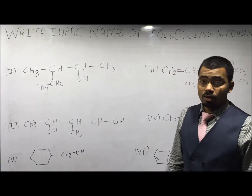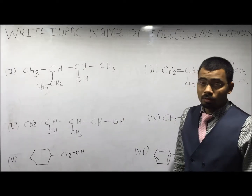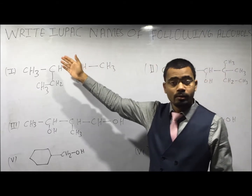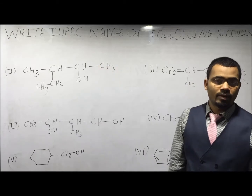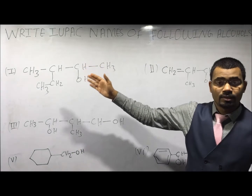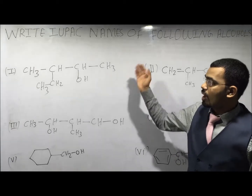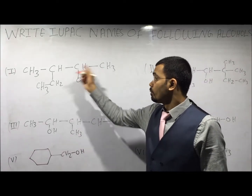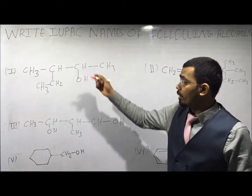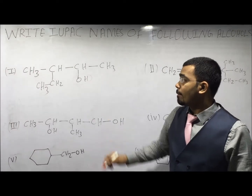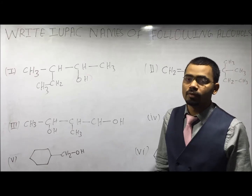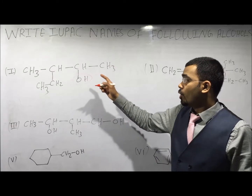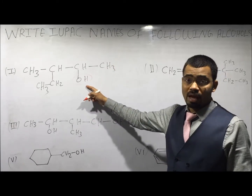Let's take an example. When you are going to write the name of the given molecule, you have to start from the secondary suffix and go towards the primary prefix and secondary prefix. First, decide the principal functional group — here it is alcohol. It has no unsaturation, so there is no primary suffix. Now find the parent chain: that chain which contains the principal functional group and the maximum number of carbon atoms.